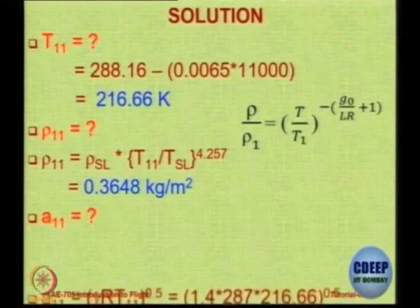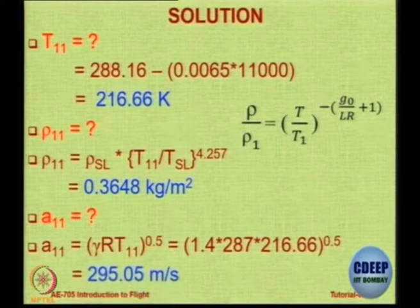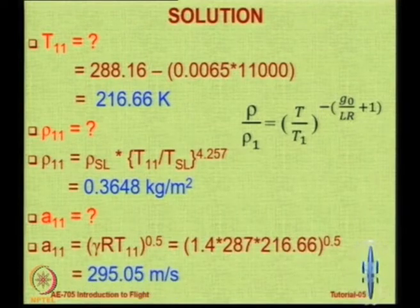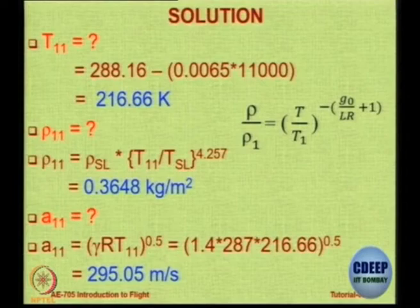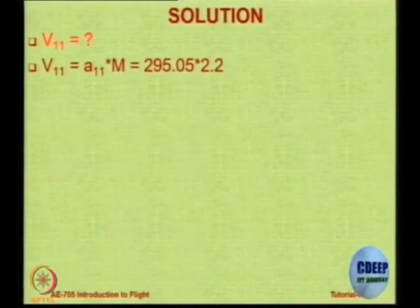How do you get the speed of sound A? Root of γRT. The value is 295 m/s — the speed of sound at 11 kilometers under ISA conditions. Now let us calculate V: that is simply 2.2 times 295, giving 649.11 meters per second.